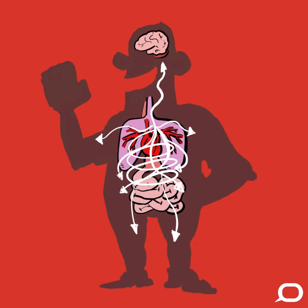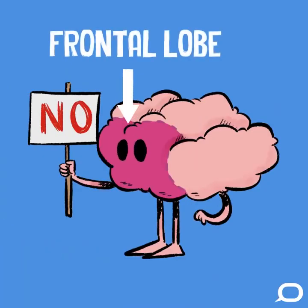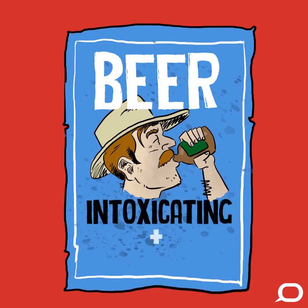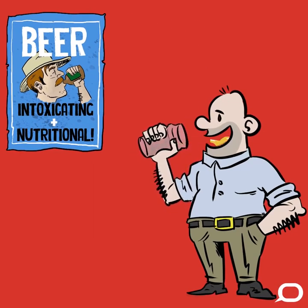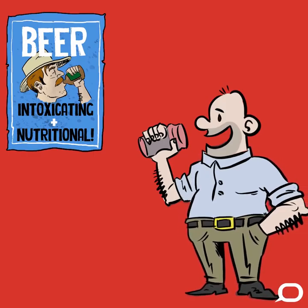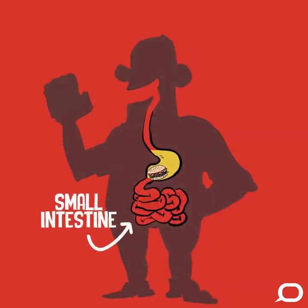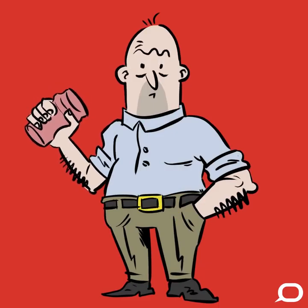Ethanol doesn't easily dissolve into oils and fats, although fats and oils can dissolve into it. As well as being intoxicating, ethanol is also a nutrient, but the bad news is that it's most readily converted to fat. And like most nutrients, it's most easily absorbed into our system by the small intestine, which means that what you have in your stomach can make a very big difference to how your night could go if you're planning to drink.